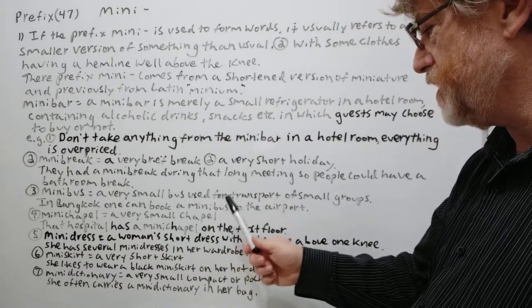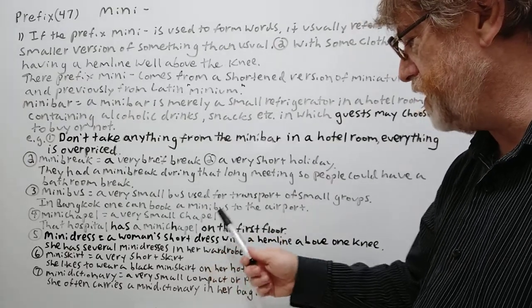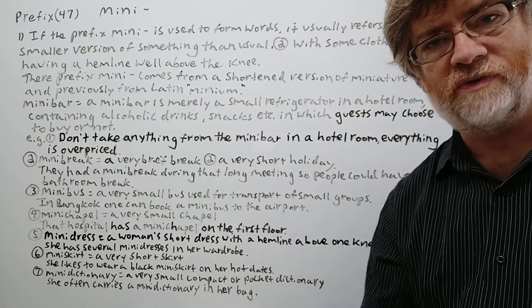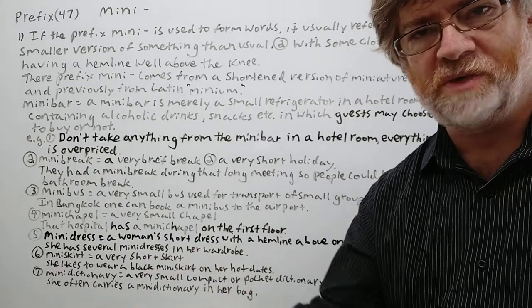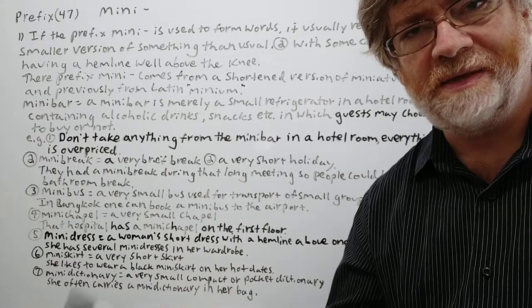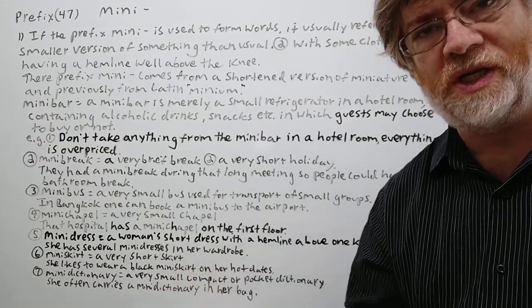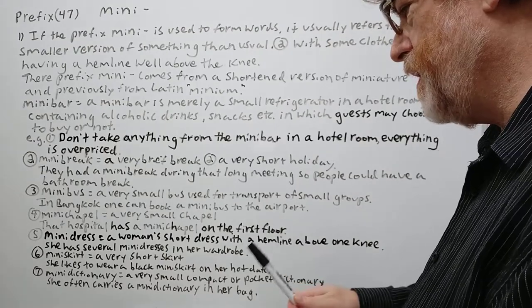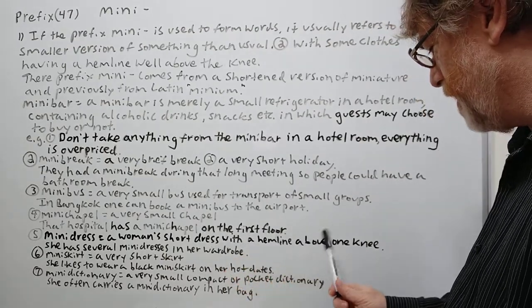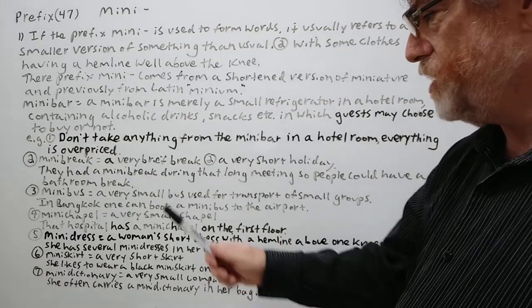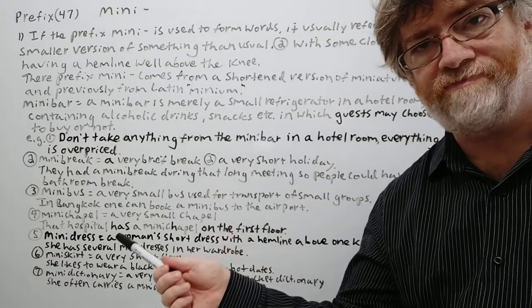Mini chapel — a very small chapel. Example: That hospital has a mini chapel on the first floor — just a very small room where people could pray in case somebody was in serious condition. Mini dress — a woman's short dress with a hemline above the knee. Example: She has several mini dresses in her wardrobe.